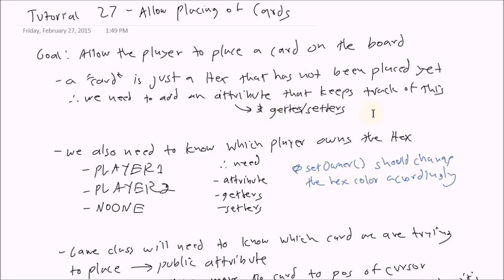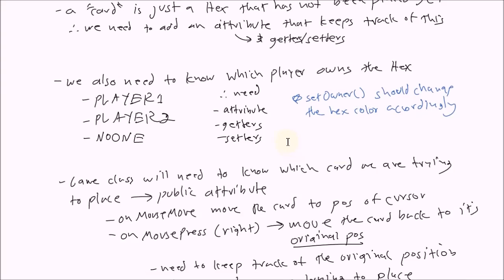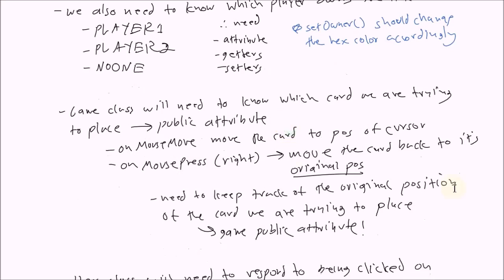We also need to know which player owns the hex. A hex is either going to be occupied by player one, player two, or no one — those are the three strings we'll use. We'll need an attribute describing who owns the hex and getters and setters for that. One note: the set owner setter should change the hex's color accordingly, since each player has a different color. We'll use set color to make that happen.